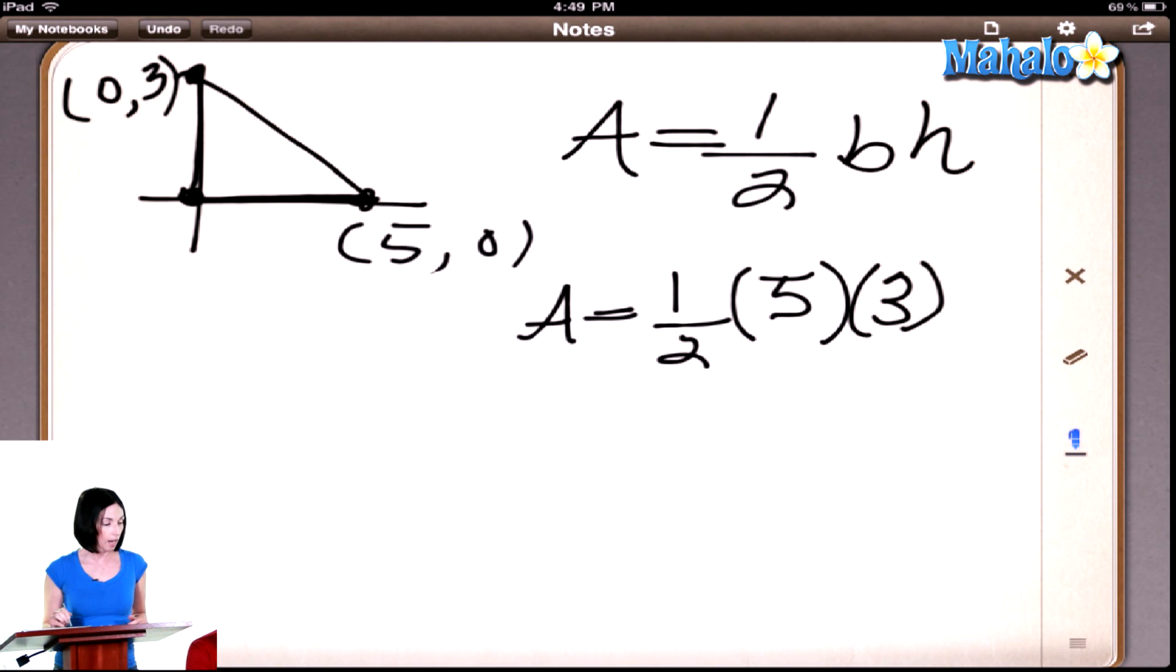So what we have is we have a triangle that has a base of five and a height of three. The height on a triangle when you're finding area is always vertical height. So now all we have to do is do the arithmetic. So what's five times three? Fifteen. Fifteen.